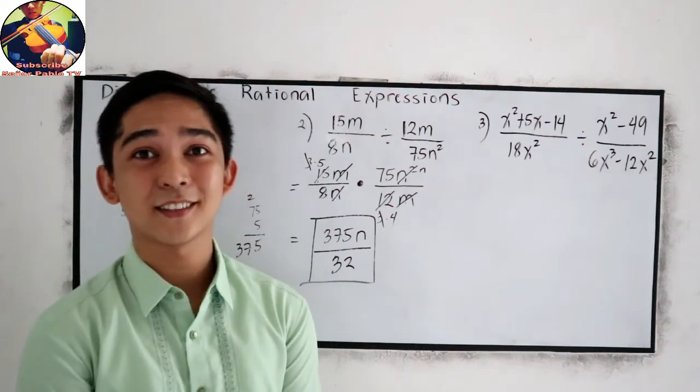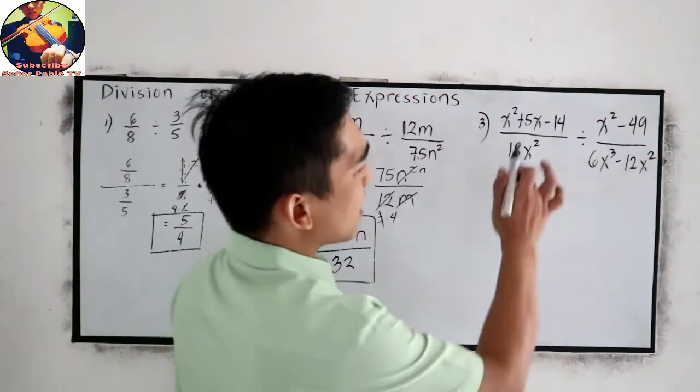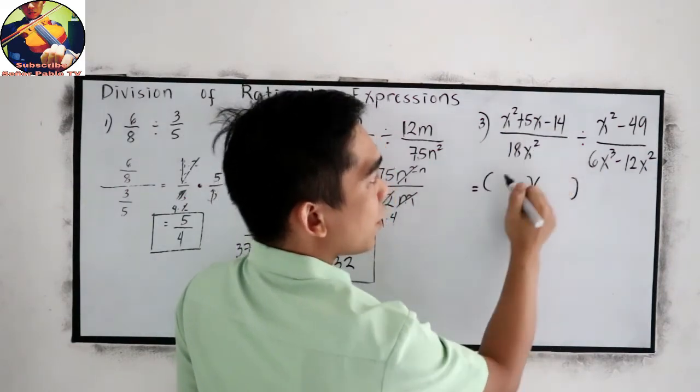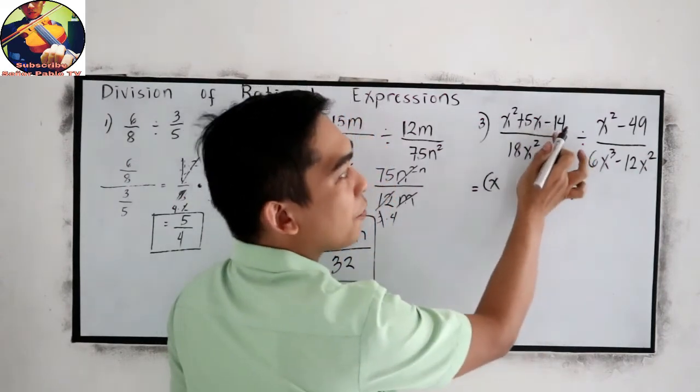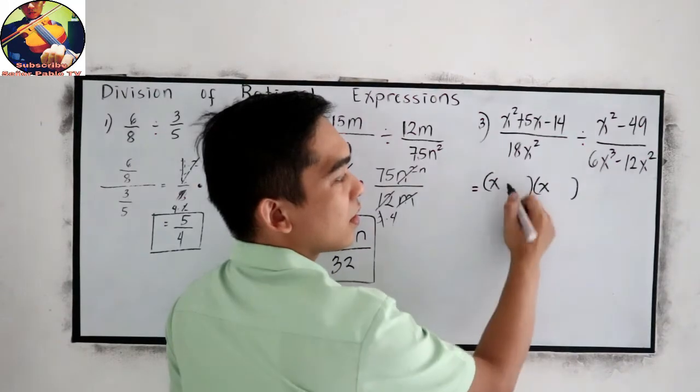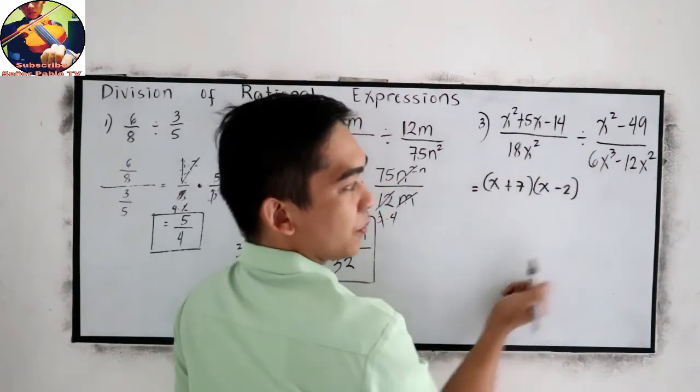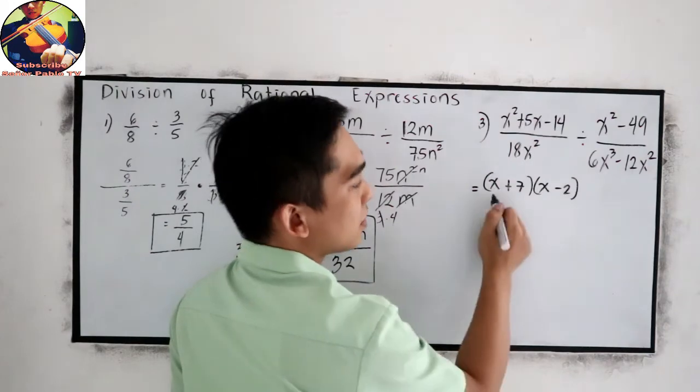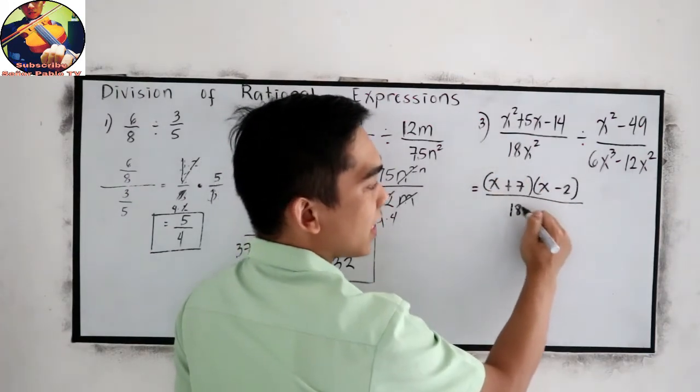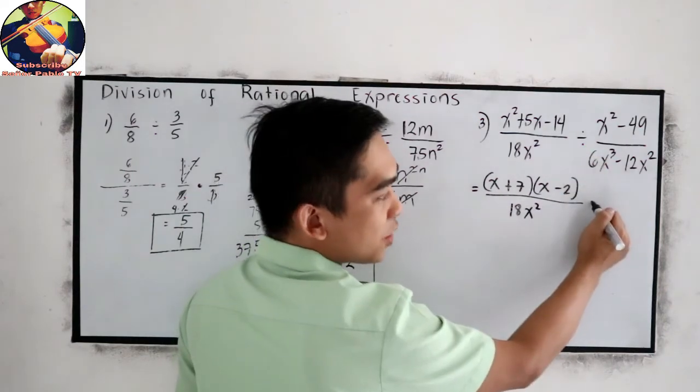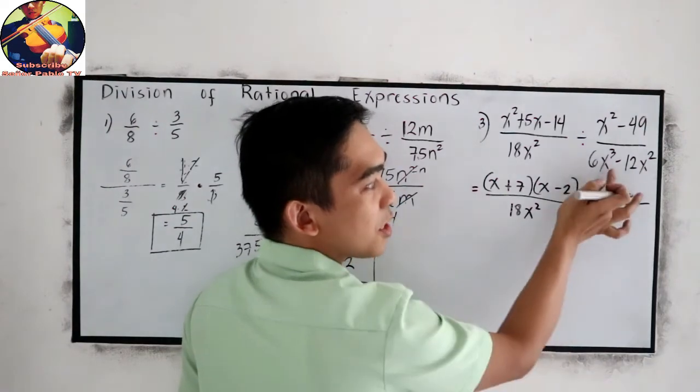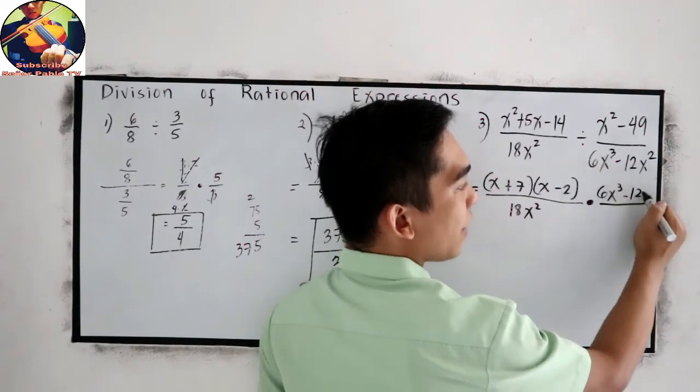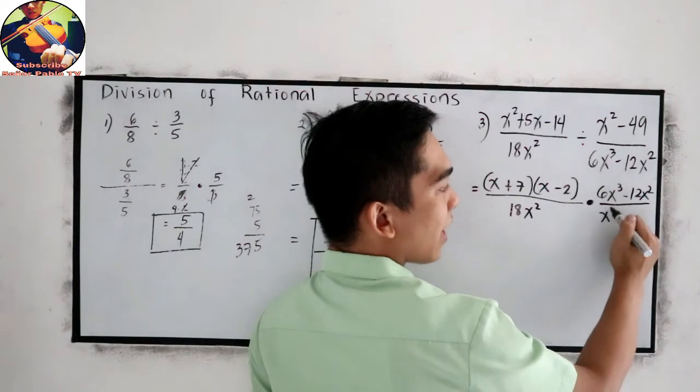We are done. Let's check your work. Let us factor our numerator. So we have x and x. Factors of negative 14, the sum must be 5. So positive 7, negative 2. 7 times negative 2 is negative 14. 7 minus 2 is positive 5. All over 18x squared. Then proceed to multiplication. Then reciprocal our denominator. So that will become 6x cubed minus 12x squared all over x squared minus 49.